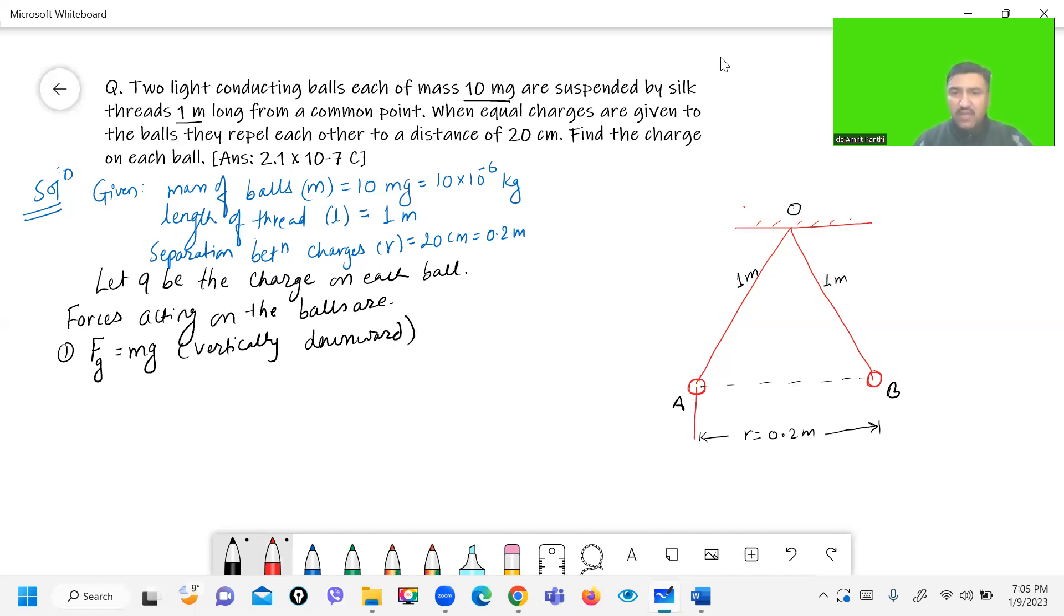In the figure, for ball A, it's mg vertically downward. For ball B, it's also mg vertically downward.